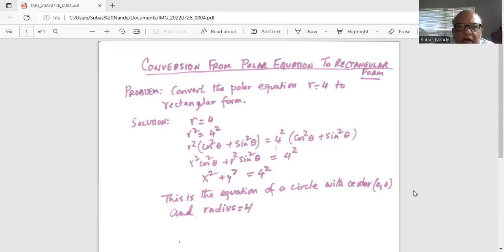Convert the polar equation r equal to four to rectangular form. R equal to four, so we can square both sides and say r squared equal to four squared.